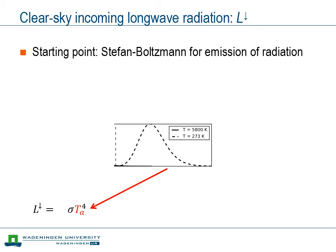That's the Planck curve that you see here. Our first idea would be that the incoming longwave radiation is simply Stefan-Boltzmann's constant times the air temperature to the power of 4.